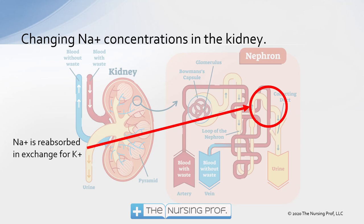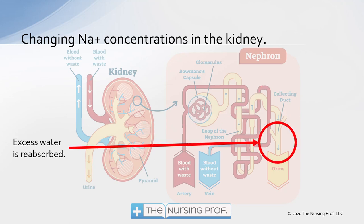Sodium is reabsorbed in the proximal part of the collecting duct, and we're exchanging it for potassium. This is the area where we can run into trouble — if we're dumping too much potassium in order to reabsorb sodium, we're going to end up with a low potassium level. Finally, down in the distal part of the collecting tubule, excess water is also reabsorbed. These components represent areas where diuretics can work to help the patient lose excess water.